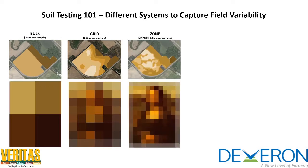The next step up, which has become a little bit more common, is zone sampling. Instead of taking samples every two and a half acres, zone sampling takes samples based on predefined zones — maybe based on yield, maybe based on imagery. Those zones are then sampled, and sometimes you combine the zones, so you can have hilltops all combined into one, or you might soil sample those hills separately. When you take all of that data and plug it in, you can see on the imaginary 100-acre field we're starting to see a little bit more detail than with the grid or the bulk.